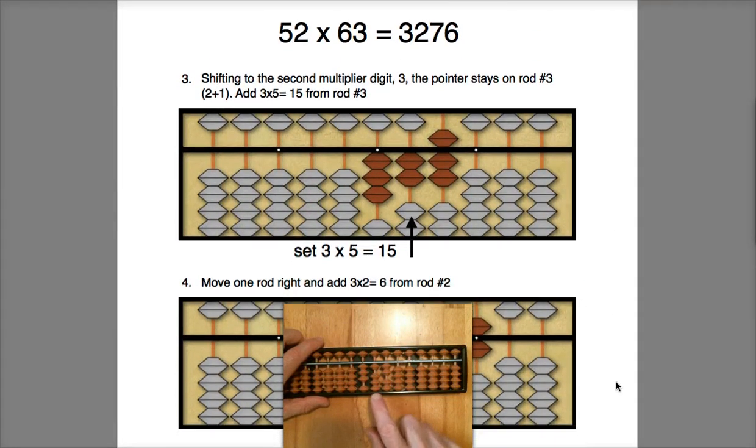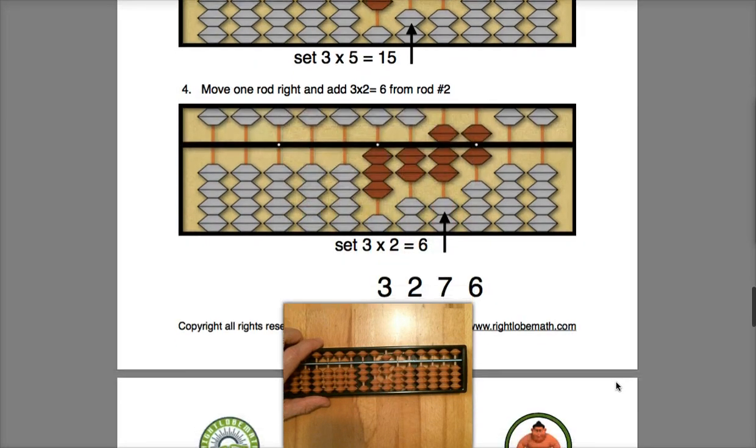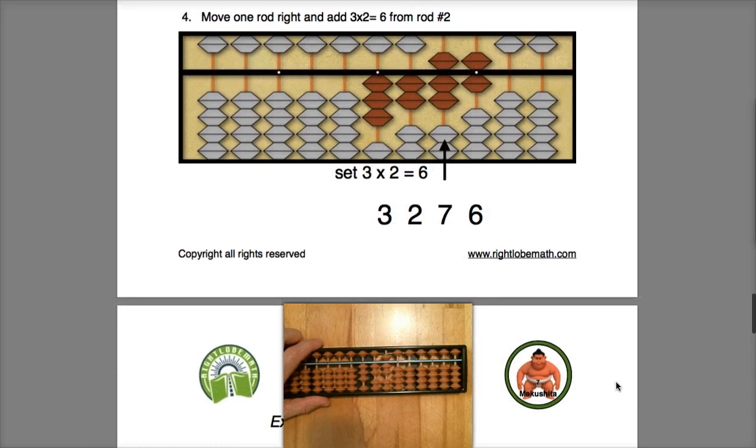Now I'm going to shift to the second multiplier digit 3. My pointer is going to remain on rod 3, and now I'm going to do 3 times 5, which is 15. Then I'm going to multiply the 3 times the second multiplicand digit 2. Three times 2 is 6.